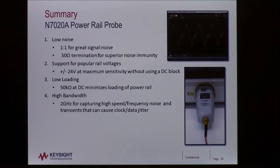Second these users were asking for support for the popular supply voltages. The N7020A power rail probe has plus minus 24 volts of probe offset so you can zoom in on the top of that DC supply and see all those AC signals that you're looking for.